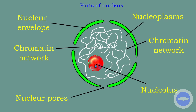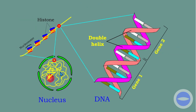We also have the nucleolus. As mentioned, the nucleolus is where ribosomes are produced; they then move out via the nucleopore. We also have nucleoplasm, which is a fluid-like substance that fills the nucleus, similar to cytoplasm. And then we have the chromatin network, which is a form of DNA.